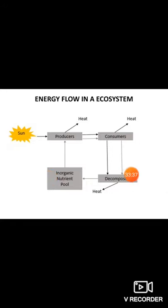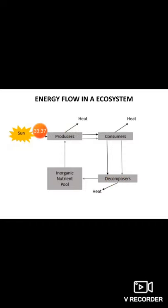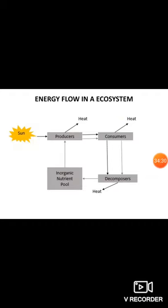An exothermic reaction is where heat energy is released into the system. When sun energy is taken by producers, heat is liberated. Producers consumed by consumers — heat is liberated. Consumers taken up by decomposers — heat is liberated. Nutrients cycle again, and whenever energy flows from one trophic level to another heat is liberated. This heat is getting released into the environment and is actually responsible for the global warming phenomena taking place.